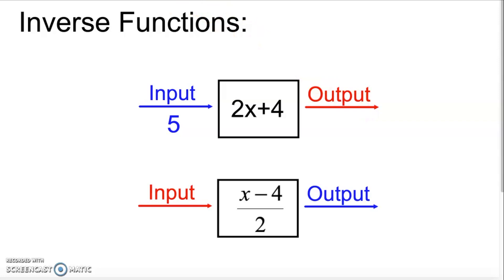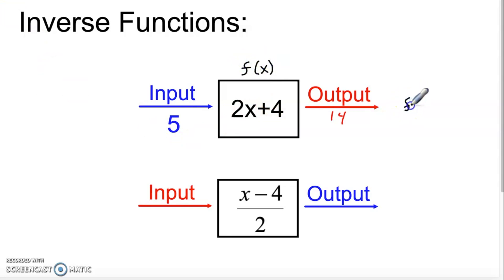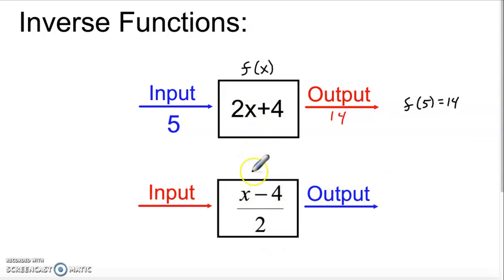In the case of the function 2x plus 4, if we put the number 5 in, this becomes 2 times 5, which is 10, plus 4, and we get 14 out. So f of 5 equals 14. Now, the function x minus 4 over 2 is actually the inverse of 2x plus 4 — it undoes the original function.